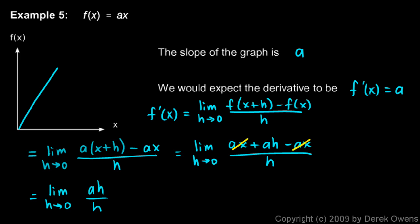And so we're left with the limit as h approaches 0 of ah over h. And these h's cancel. Even though this would give us 0 over 0 if we stuck 0 in for h right there, we can simplify this.